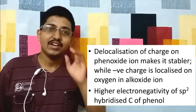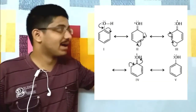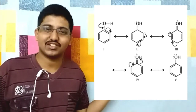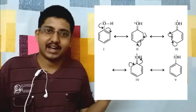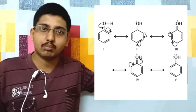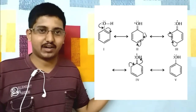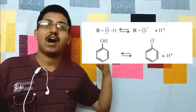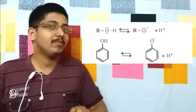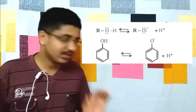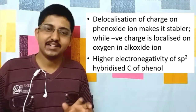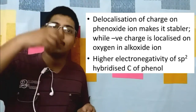Why are phenols more acidic than alcohols? This is because the phenoxide ion formed by resonance is more stabilized — the negative charge is delocalized all over the benzene ring, making the phenoxide ion more stable than the alkoxide ion formed in the acidic reactions of alcohols.